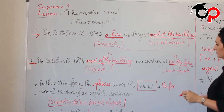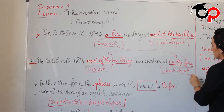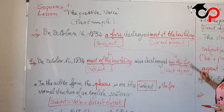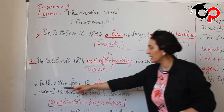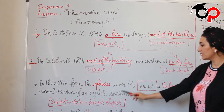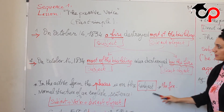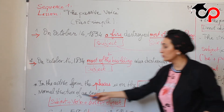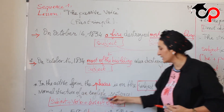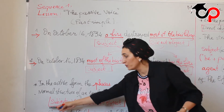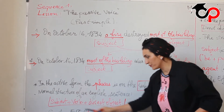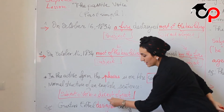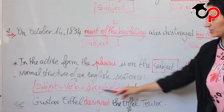Let's call it the object. In the active form, the focus is on the subject, which is the fire. The normal or typical structure of an English sentence is, as you already know, the subject, the verb, and the direct object. I insist on that word: direct object.